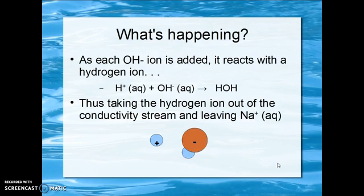Now what's happening is, as each hydroxide ion is added, it's reacting with a hydrogen ion. Coulombic attraction brings them together rapidly to form water. This takes the hydrogen ion out of the conductivity stream and leaves sodium ions in the conductivity stream. You can see the merging of the hydrogen and hydroxide ions in this slide.